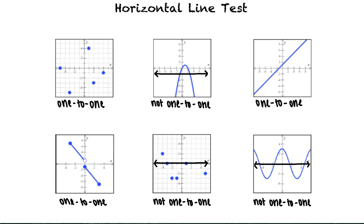Nice job! It seems like you have the hang of this. To determine whether a function is 1 to 1, we need to see if it passes the horizontal line test. A function is 1 to 1 if we cannot draw a horizontal line that intersects the graph more than once. A function is not 1 to 1 if we can draw a horizontal line that intersects the graph more than once.